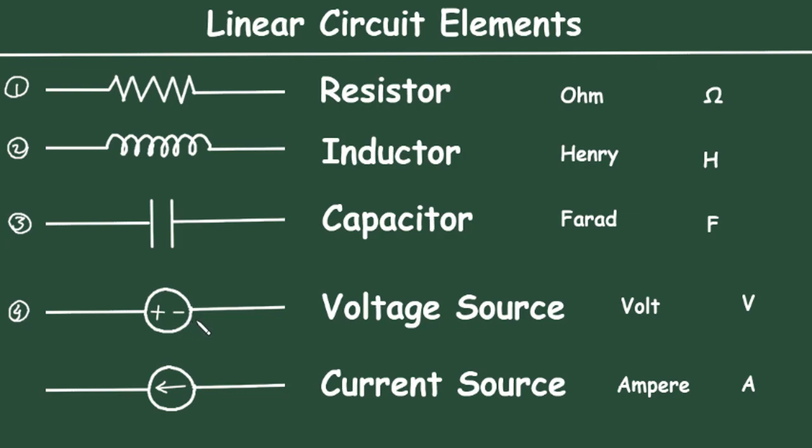Voltage sources can be represented by batteries or power supplies. The unit of measurement for voltage is the volt, symbolized as V. A voltage source maintains a specific potential difference between its terminals, allowing electrical energy to flow through the circuit.